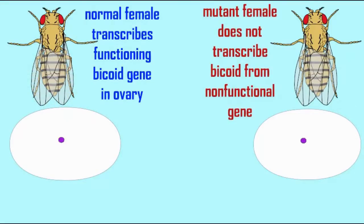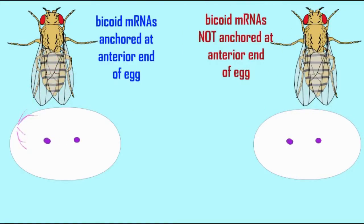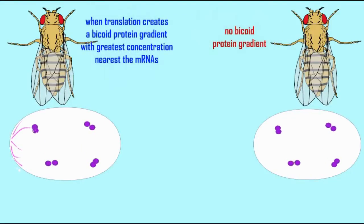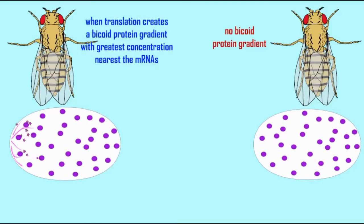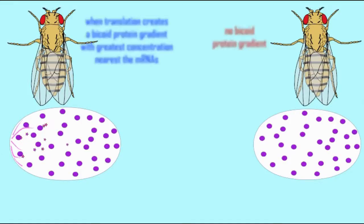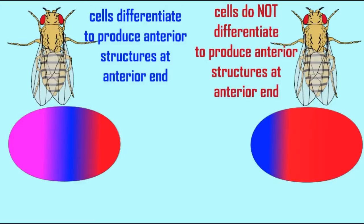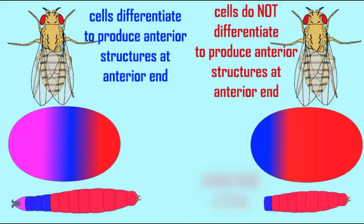In mutant females that do not express the gene bicoid, the bicoid mRNAs are not anchored to the anterior pole of the egg. Even if the embryo has a functional bicoid gene from the male parent, it is these maternal transcripts which are essential. Without these maternal transcripts, bicoid protein is not produced in the egg, no gradient of the bicoid protein is produced, and thus anterior structures — the head end of the larvae — do not form. This mutation is therefore an embryonic lethal.